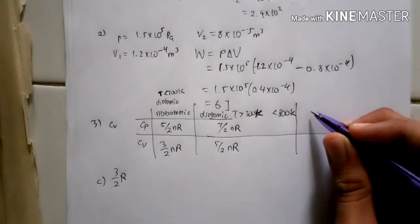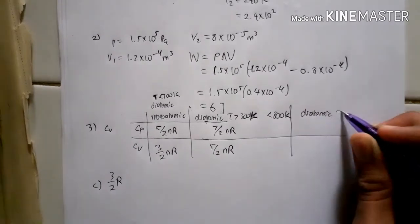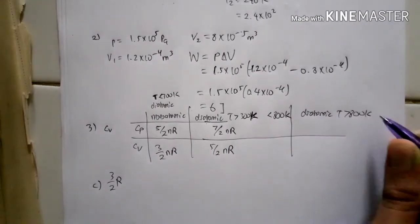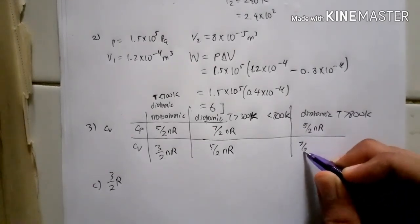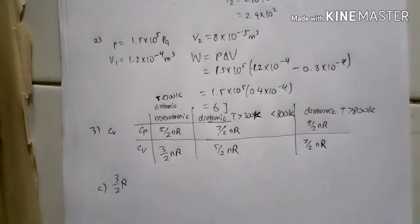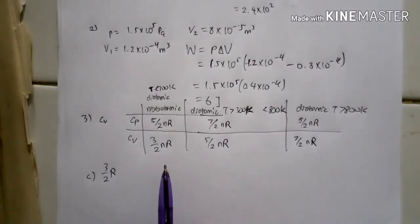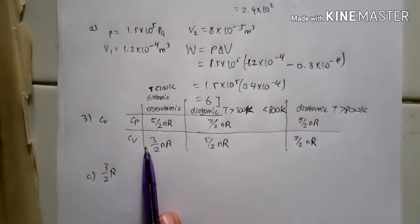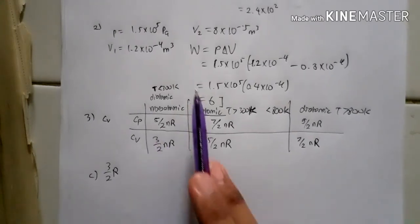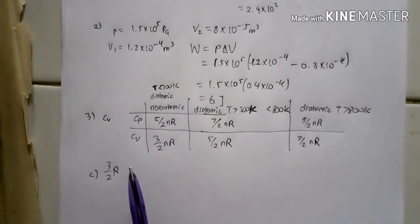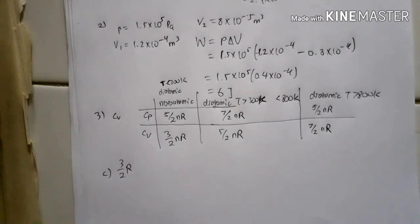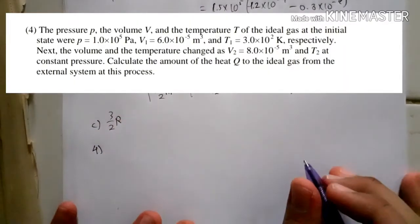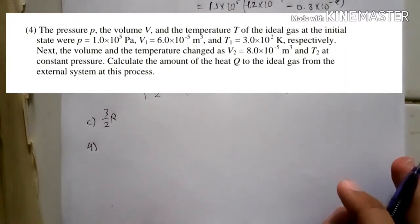Since the question asks for the molar specific heat CV at constant volume for a monatomic ideal gas, from the table the answer is 3/2 R, where n equals 1 mole. So the answer is option C.